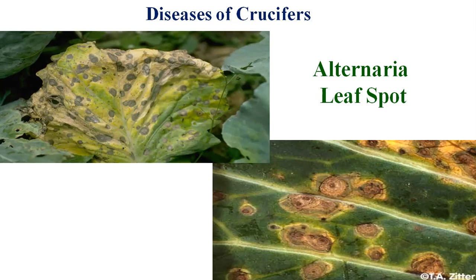The drying and shedding of the leaves causes destruction in the development of the plant, which has an adverse effect on the yield. These are some of the factors related to Alternaria leaf spot and blight.